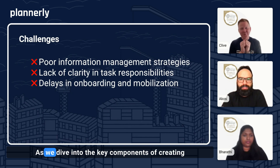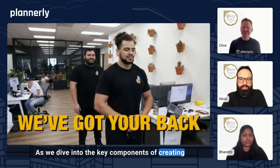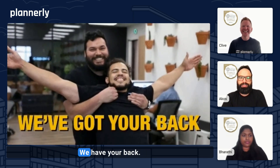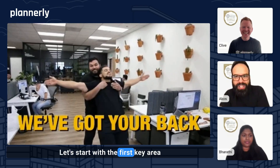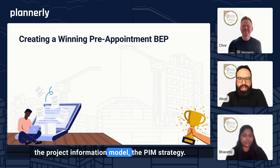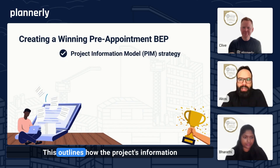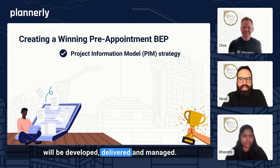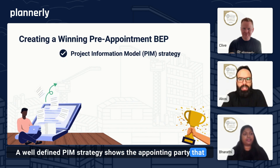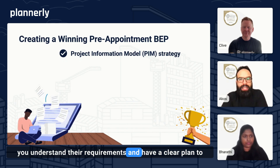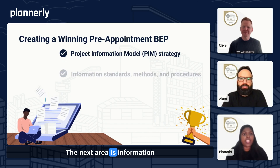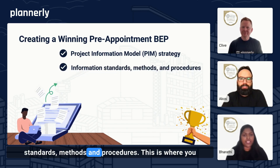We'll dive into the key components of creating a winning strategy for pre-appointment VIM execution plans. Let's start with the first key area: the project information model, the PIM strategy. This outlines how the project's information will be developed, delivered, and managed. A well-defined PIM strategy shows the appointing party that you understand their requirements and have a clear plan to deliver the right information at the right time. The next area is information standards, methods, and procedures.